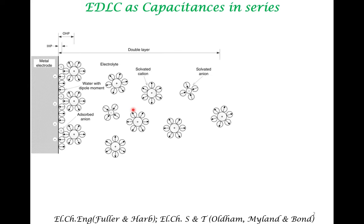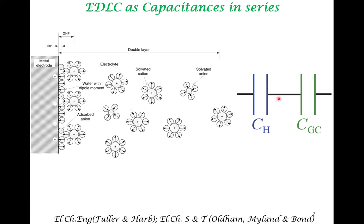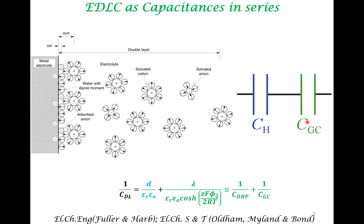The logical leap of the Stern model was to consider that these two capacitances are in series — the Helmholtz capacitance and the Gouy-Chapman capacitance, which represents the capacitance contribution of the ions in that diffuse layer. This combination captures many important features, which we will now examine.